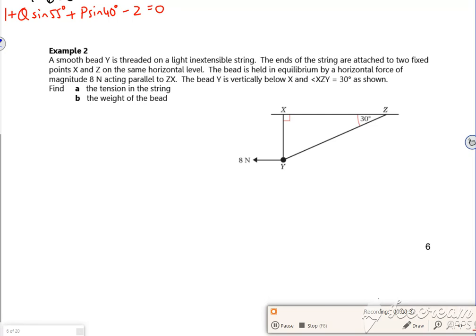Right, now then, it's a single string. If it's a single string, the tensions are the same. So if you imagine, I've got the weight of this bead, mg, pulling down. So I've got tension that's acting against it. I've got the pull of the 8 Newtons pulling to the left. So I've got tension acting against it, keeping it all taut.